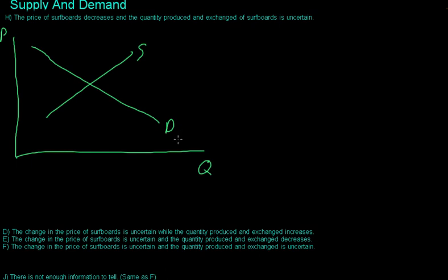All right, so let's say that there's a situation where the price of a good, in this case surfboards, decreases and the quantity produced and exchanged of surfboards is uncertain. So we have a question mark for Q and we know that price is going down.